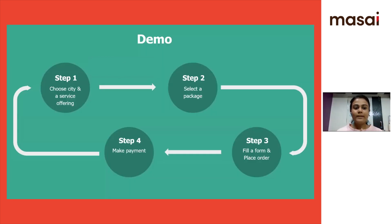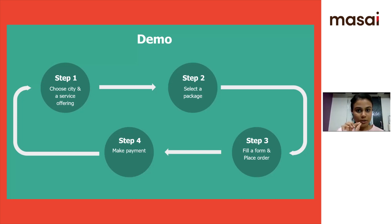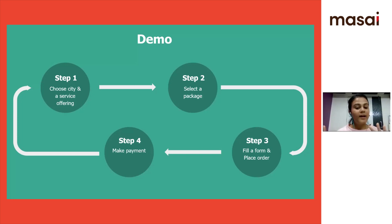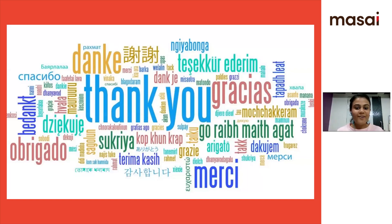Quickly showing the demo — each user has to select a city and can select one service from various product offerings. Once they go to the product page, they can select a particular product, fill a form, and book the service or product. Finally, they would go to the cart, make payment, and get redirected to the orders page. Misal will be taking care from here.